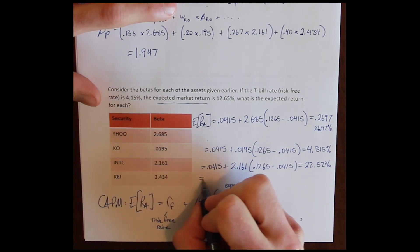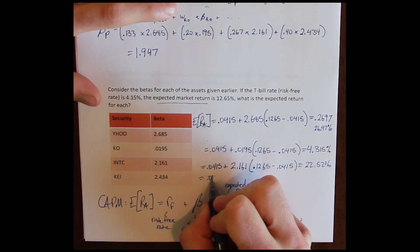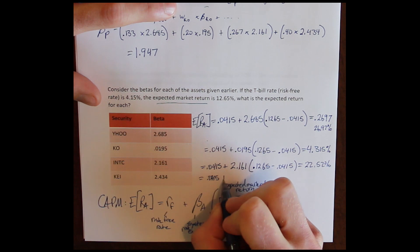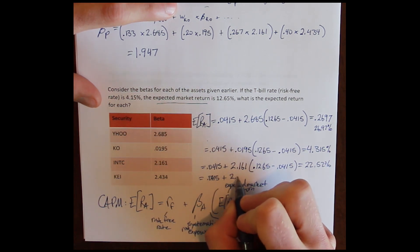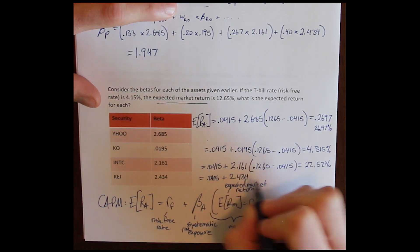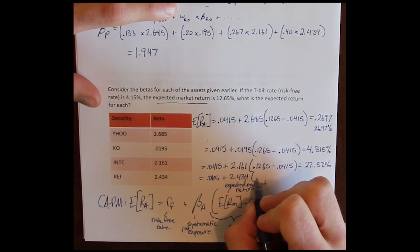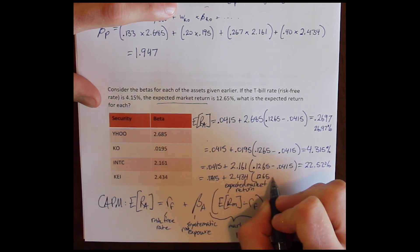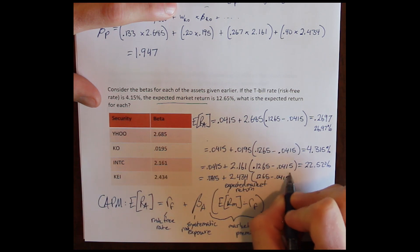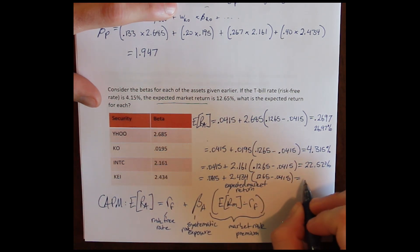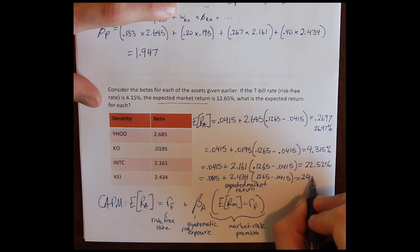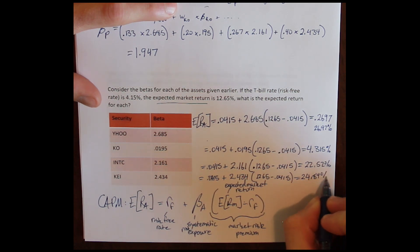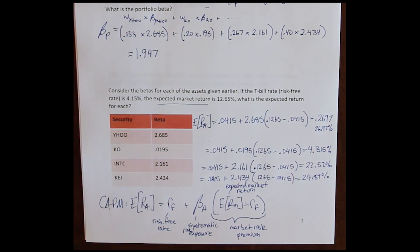And finally, for Keithley: risk-free rate 4.15%, beta for Keithley 2.434. Expected market return minus the risk-free rate is the market risk premium. Multiply that by beta and we get 24.84% as the expected return for Keithley Industries. We'll see you next time.